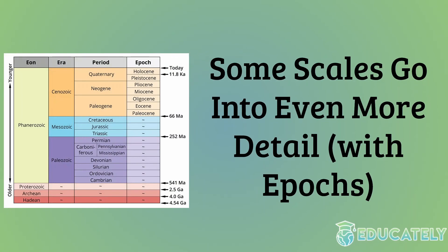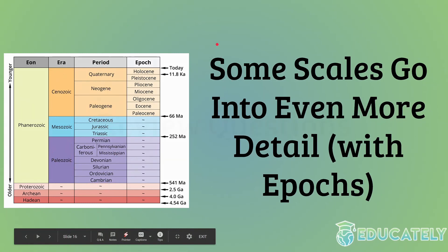Some scales go into even more detail, especially newer scales. They have periods called epochs — there are different pronunciations. They consist only of the Cenozoic era, but provide an even more detailed way to divide the different organisms that were alive at different times. One development in more modern geologic time scales is that they get rid of the Tertiary period and replace it with the Paleogene and Neogene periods. If your teacher tells you to memorize the entire scale, I'd go with this one, as it seems to be more modern.